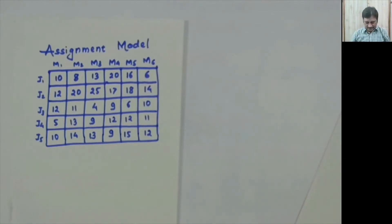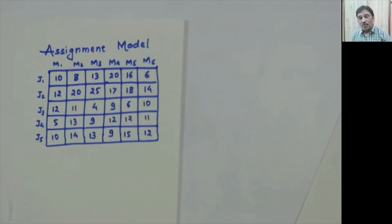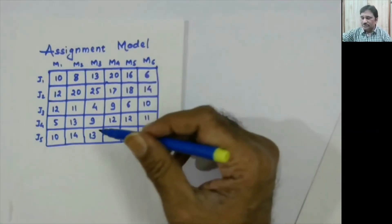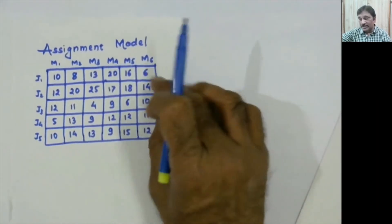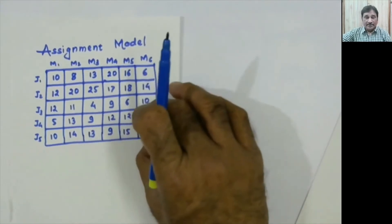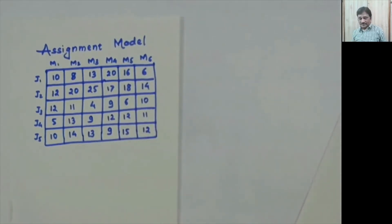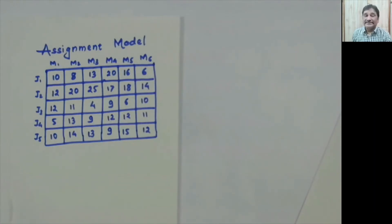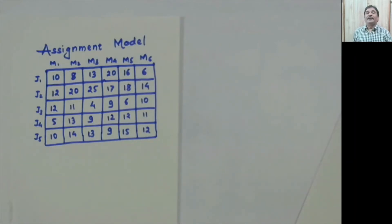To make the matrix square, we add rows or columns equal to the gap between the number of rows and columns. Here we add one row labeled 'dummy' with all zero entries. If there were 4 rows and 6 columns, we would add two rows. If there were 6 rows and 4 columns, we would add two columns. All elements in dummy rows or columns are zero.